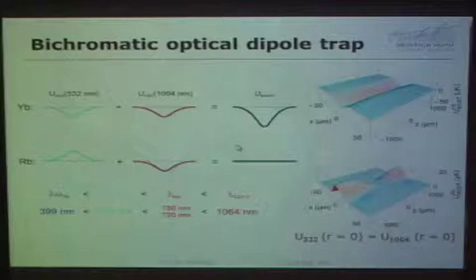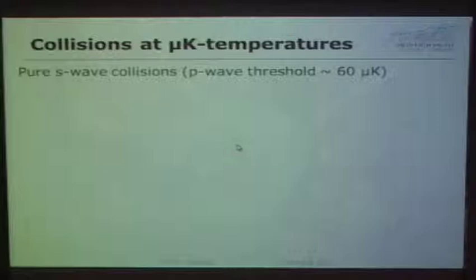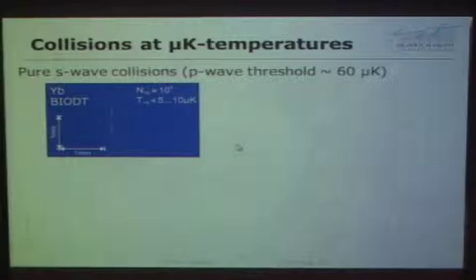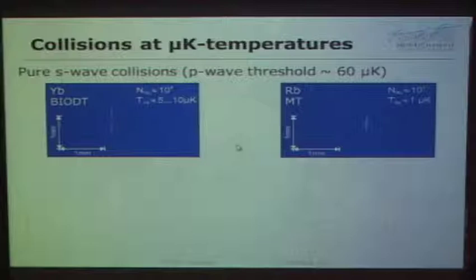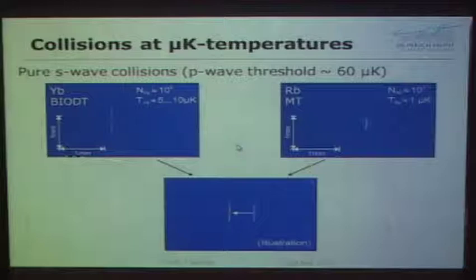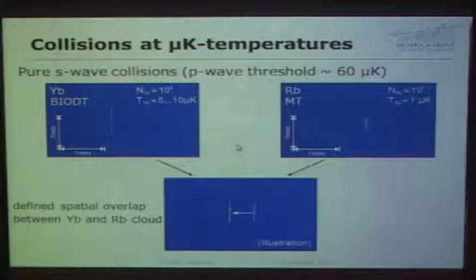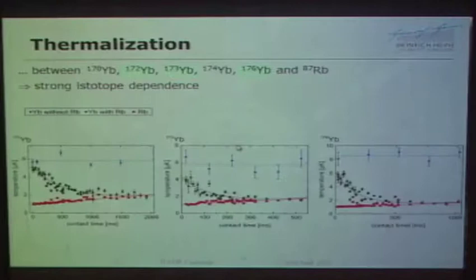The first thing we did was look at the interactions. We prepare ytterbium in our bichromatic ODT at temperatures of around 5 microkelvin, and rubidium in a magnetic trap located approximately 500 micrometers to 1 millimeter away. We then move the two on top of each other, giving a defined spatial overlap and a defined start of the interactions. We did this for several isotopes.